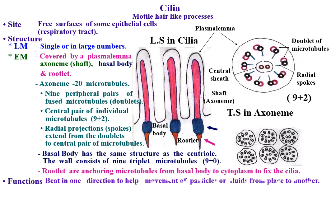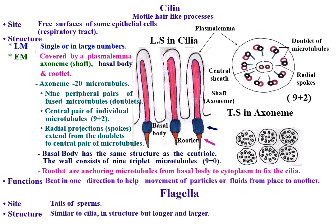Flagella are other forms of motile appendages. Site: they form the tails of sperm and help their movements. Structure: flagella are similar to cilia in structure but longer and larger.